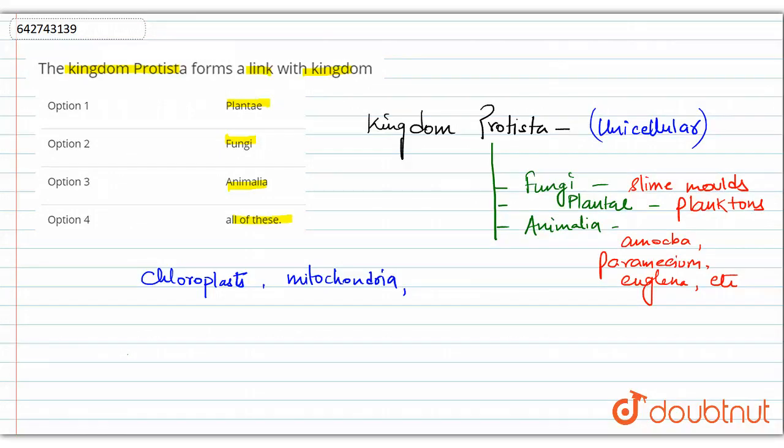Another characteristic feature is the locomotory organ, which is very specific for this kingdom. These locomotory organs like cilia and flagella are present in euglena, and pseudopodia is a characteristic feature of amoeba. This is another characteristic feature when we talk about Protista.